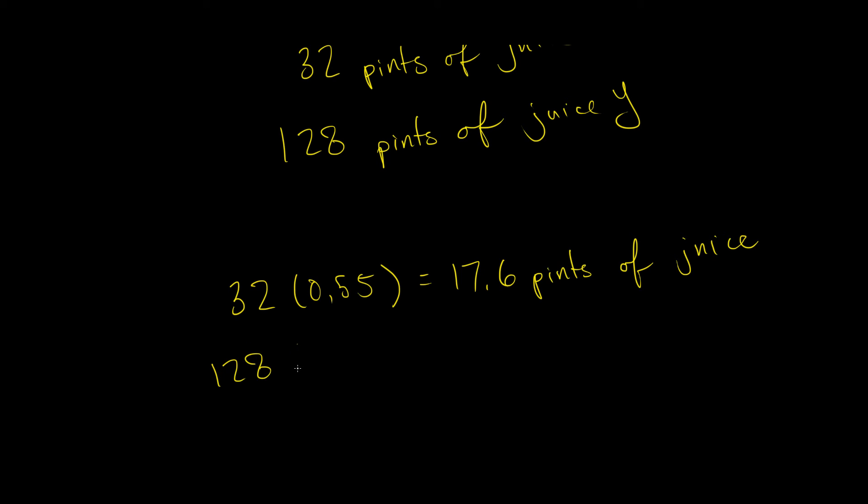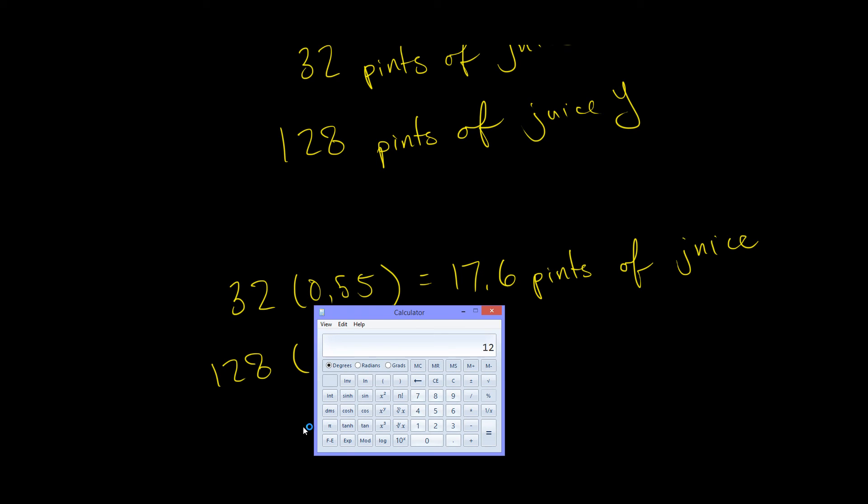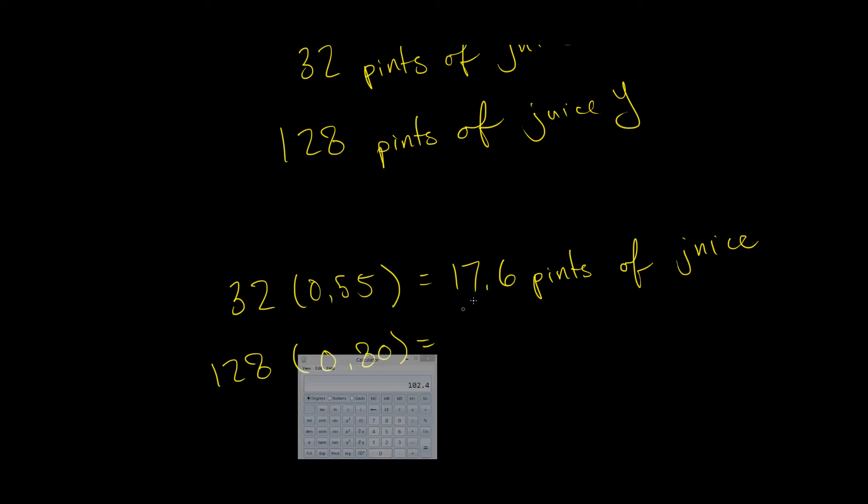And then we're going to do the same thing for juice Y. So we have 128 pints of juice that is 80%, and that gives us 128 times 0.8, which is 102.4 pints of juice. So in total, we have 6 plus 4 gives us 10, we carry the 1, this gives us another 10. So we get 120 pints of juice.